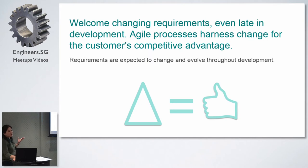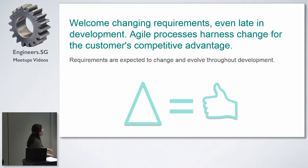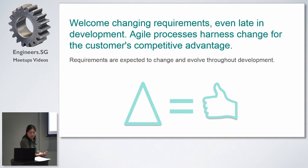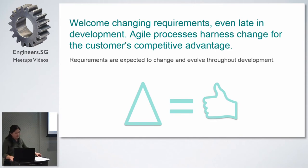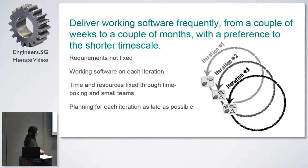Change is good — we expect change, and basically any change we should overcome. This allows us to respond to what the customer requires and give the customer a competitive edge. We deliver software frequently — in weeks, not months. Make sure the iteration is a couple of weeks instead of months. Requirements are not fixed; we get them as late as possible, basically at the start of the iteration. Then only we fix the requirements, then only we start planning. Time and resources should be fixed through time-boxing and small teams, and we plan for each iteration.